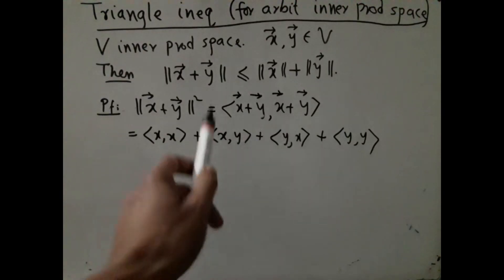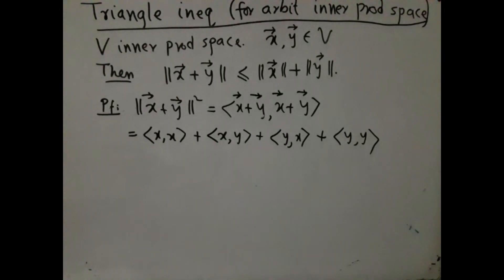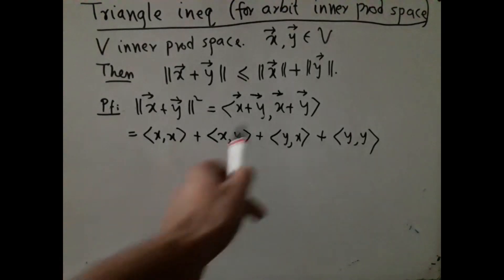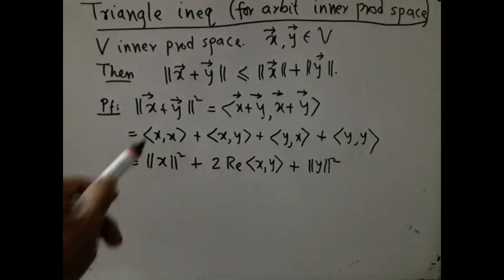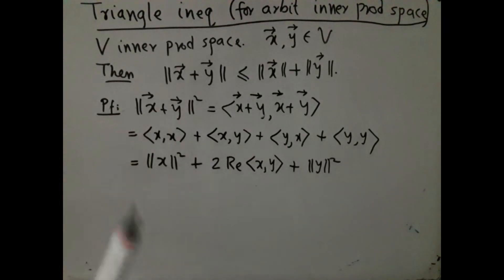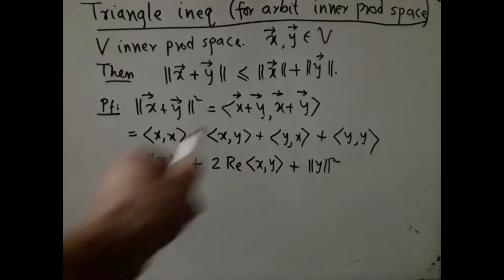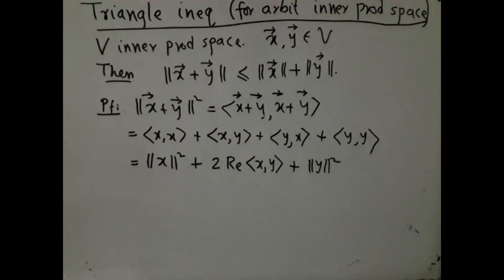However, we know that they must be actually complex conjugates of each other, so their sum must be twice the real part. We have just used the fact that this is squared norm of x, that is squared norm of y, and we have combined these to get this thing.